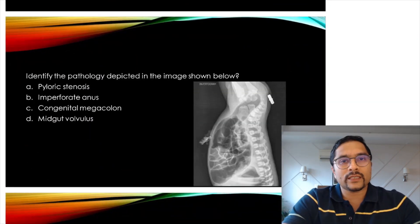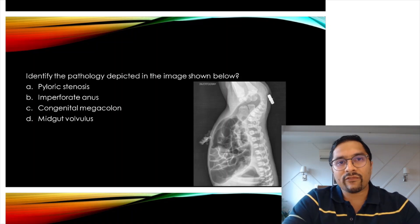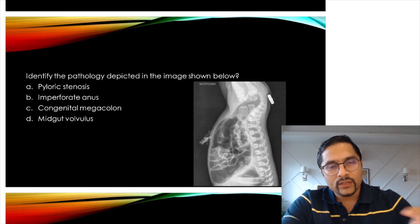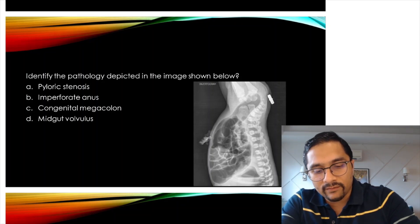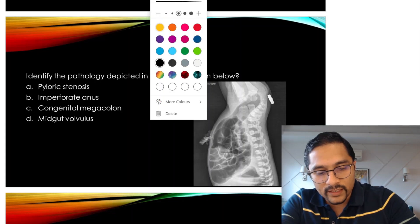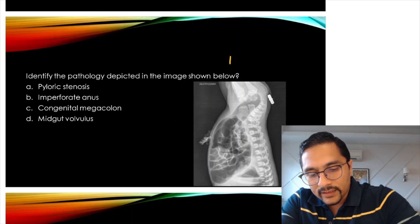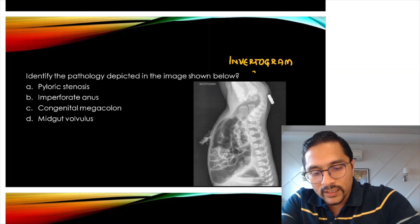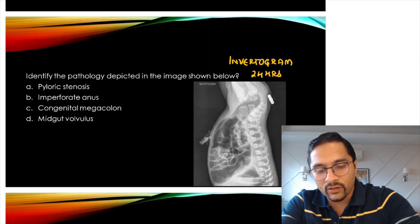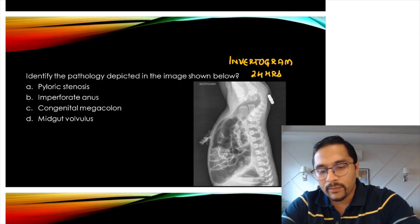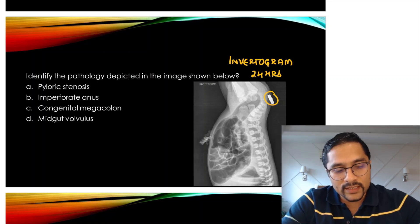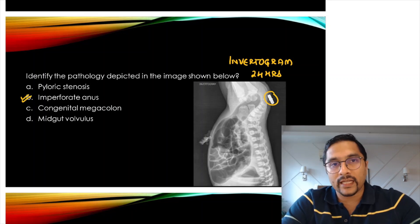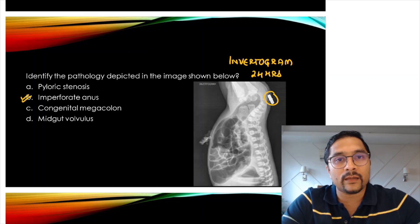Another question asked previously: identify the pathology depicted in the image below. This was a correlation with radiology — the investigation shown is an invertogram. An invertogram is usually done after 24 hours where you invert the child and put a metallic pointer at the proposed site of the anal opening. This is done for imperforate anus or anorectal malformations.